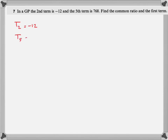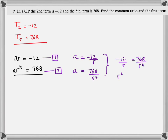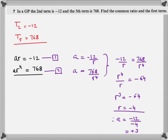T2 is negative 12, so AR equals negative 12. T5 is 768, so AR to the power of 4 equals 768. Making A the subject: from the first equation, A equals negative 12 over R; from the second, A equals 768 over R to the power of 4. Equating the two: negative 12 over R equals 768 over R to the power of 4, giving R cubed equals negative 64, so R equals negative 4. Plugging back into the first equation gives A equals 3.